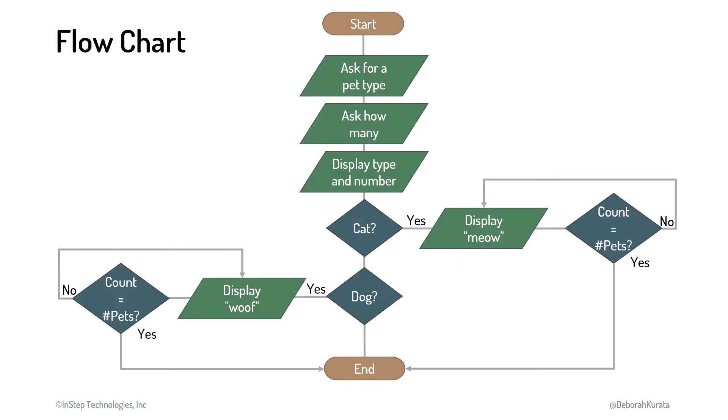Back in the olden days, software developers learned how to flowchart their flow of control, like this. We start with an oval to mark the beginning of the program. We use a parallelogram for any input or output, like displaying a message.